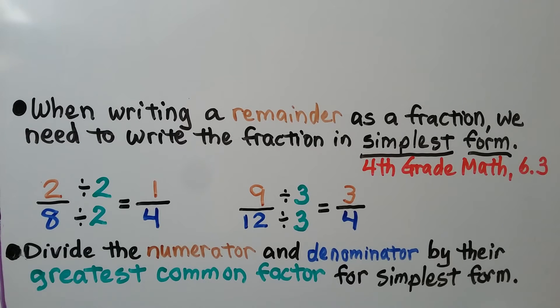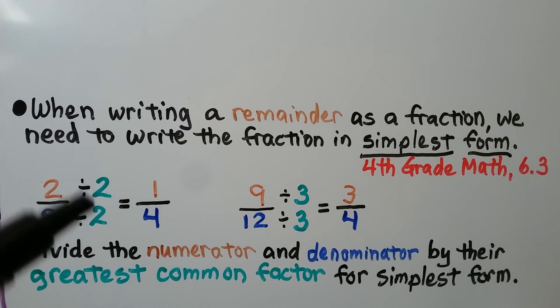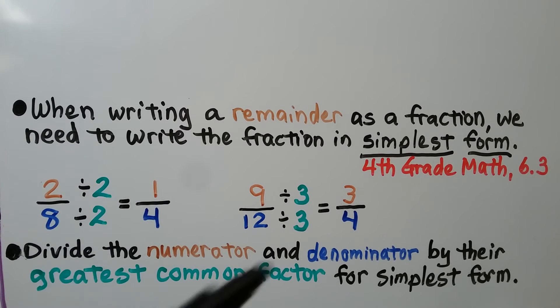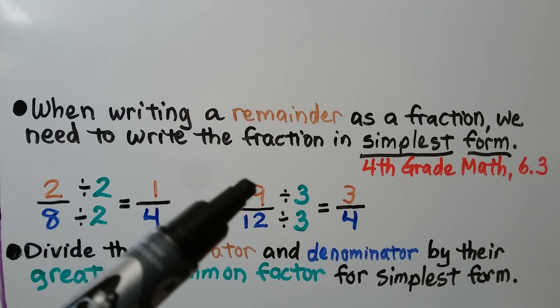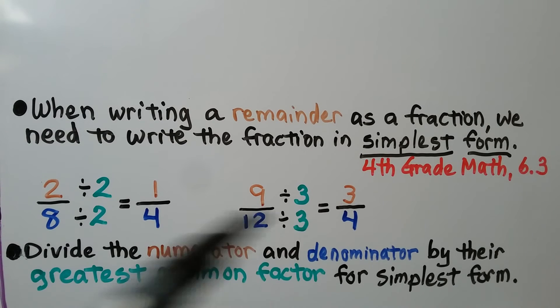When writing a remainder as a fraction, we need to write the fraction in simplest form. So 4th grade math 6.3 is linked in the description when we first learned how to write fractions in simplest form. If you need a reminder, we divide the numerator and denominator by their greatest common factor for simplest form. 2 and 8, the greatest common factor they have is a 2. We divide the numerator and denominator by that greatest common factor. We get 1 4th. For 9 12ths, the greatest common factor for a 9 and 12 is a 3. We divide the numerator and the denominator by 3. We get 3 4ths. And they're written in simplest form.